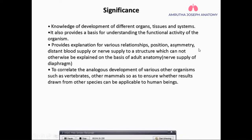What is the reason for that asymmetry? Why is the heart placed towards the left and not to the right or the center? These asymmetries, and the blood supply and nerve supply of structures, cannot be explained on the basis of adult anatomy alone — but embryology can explain them.